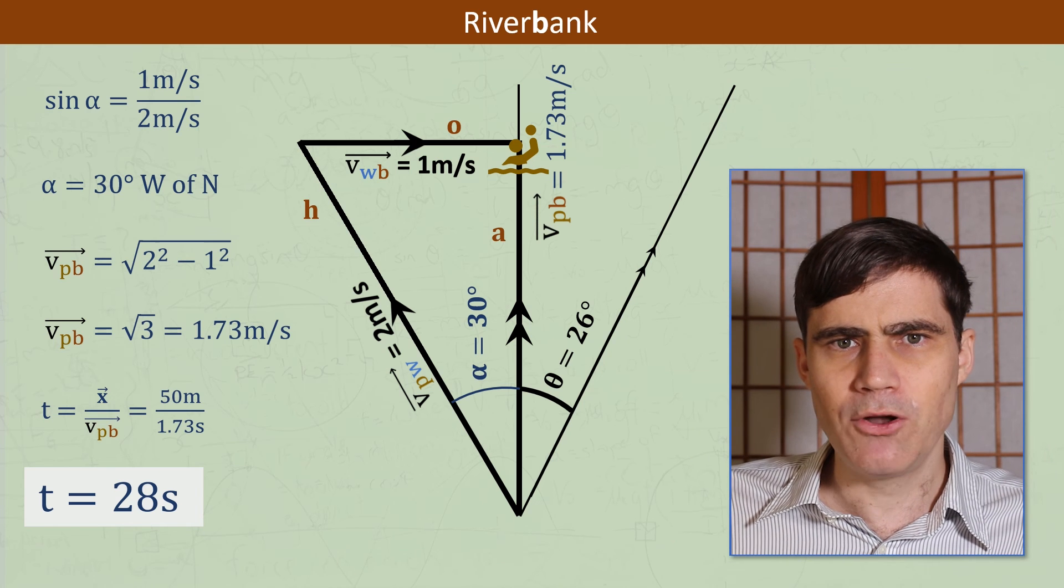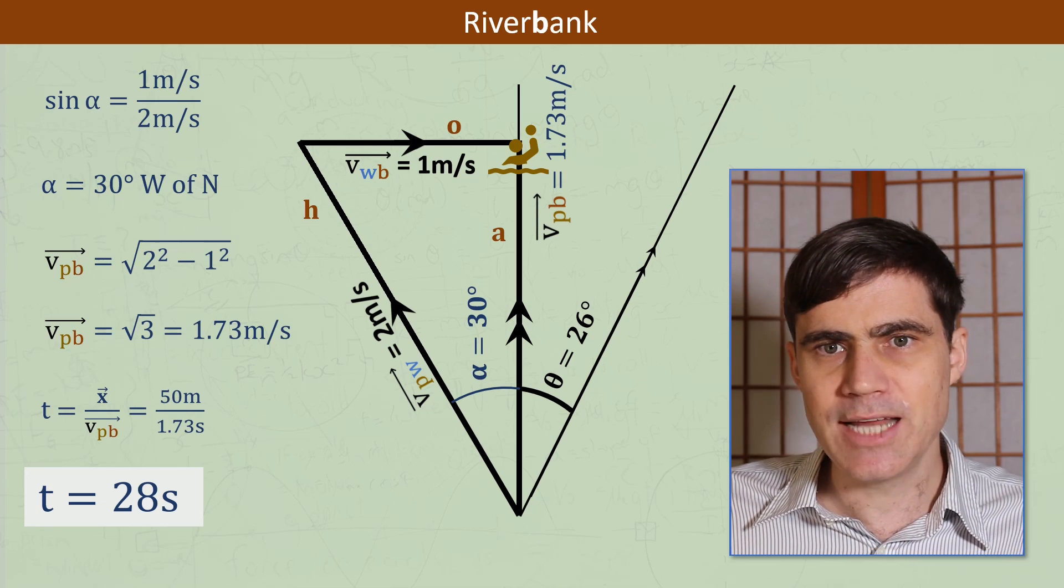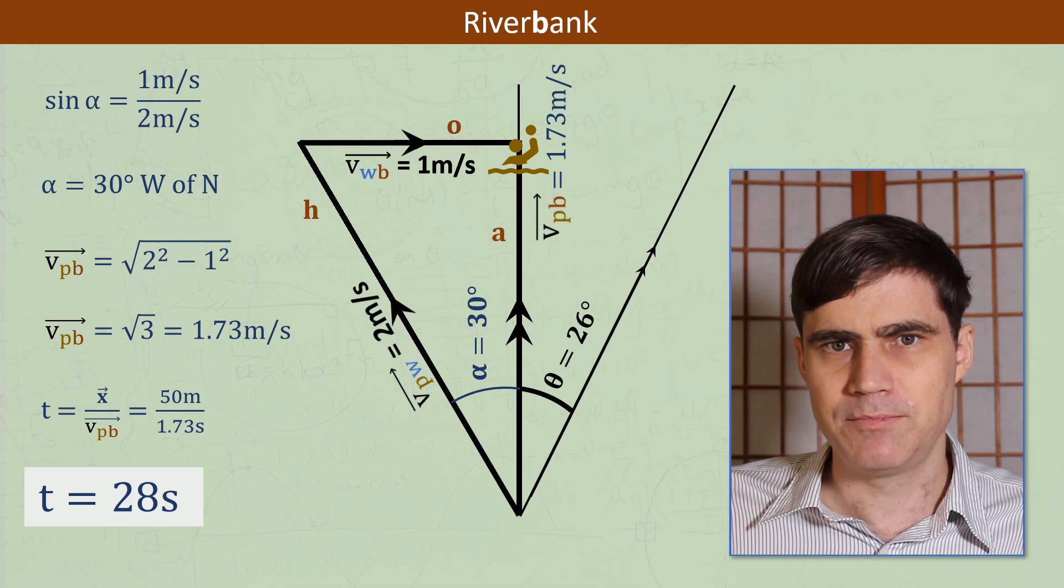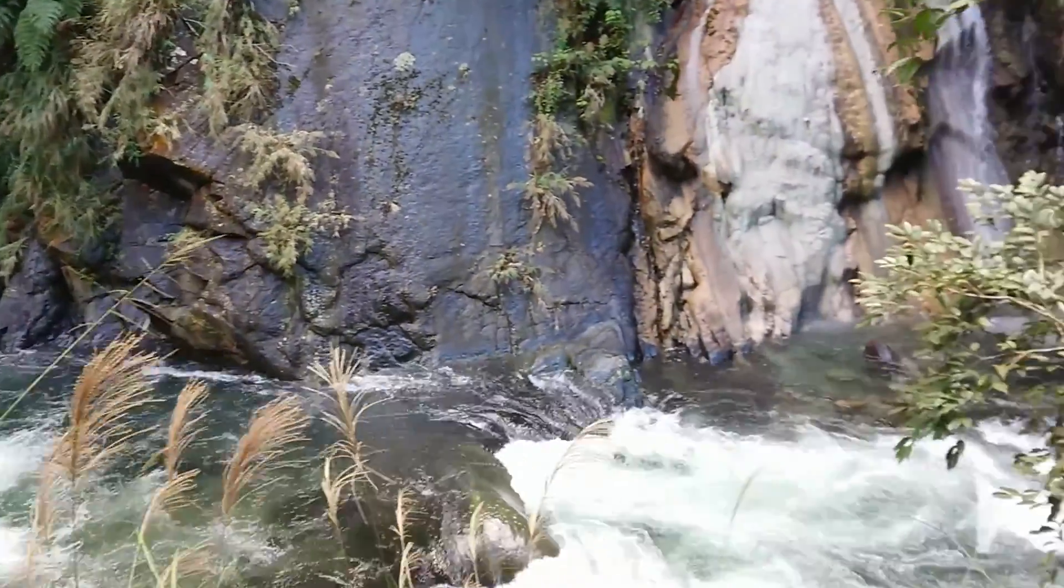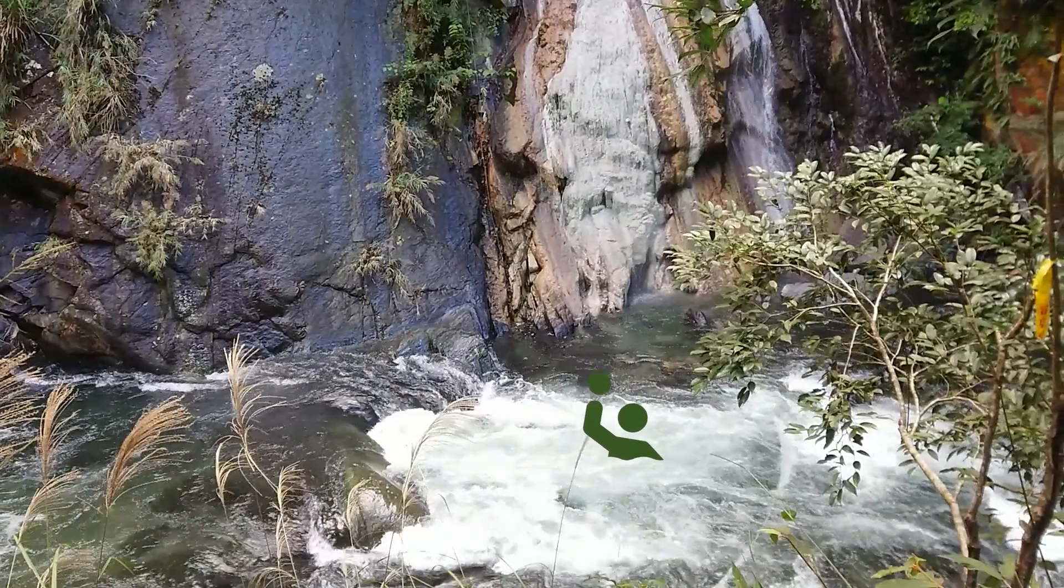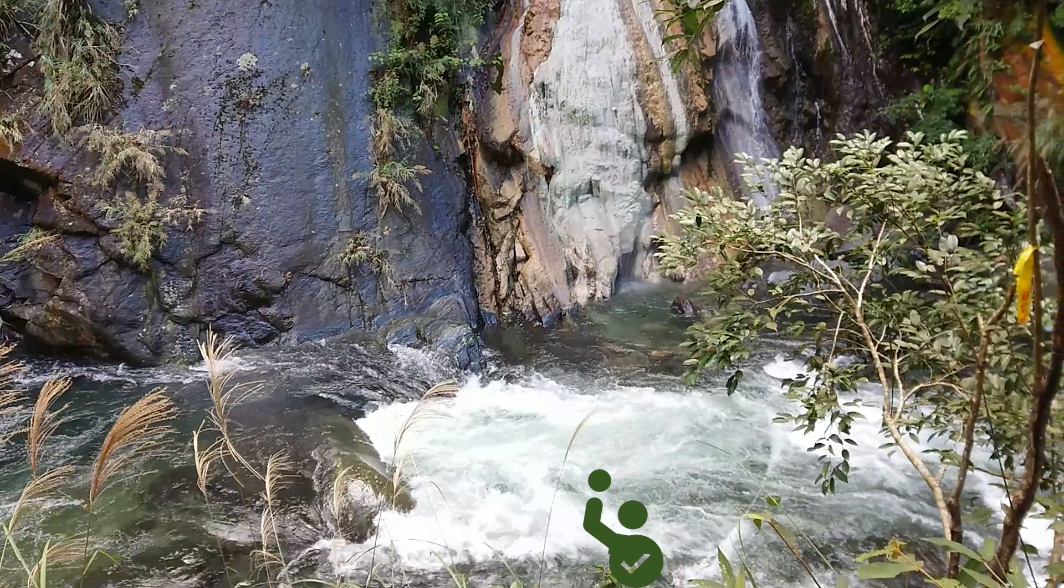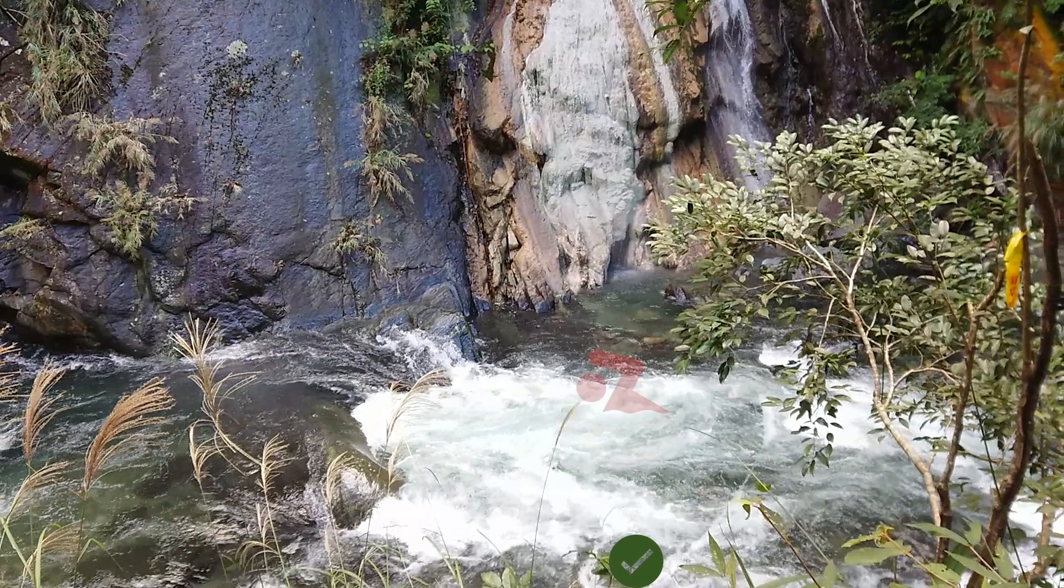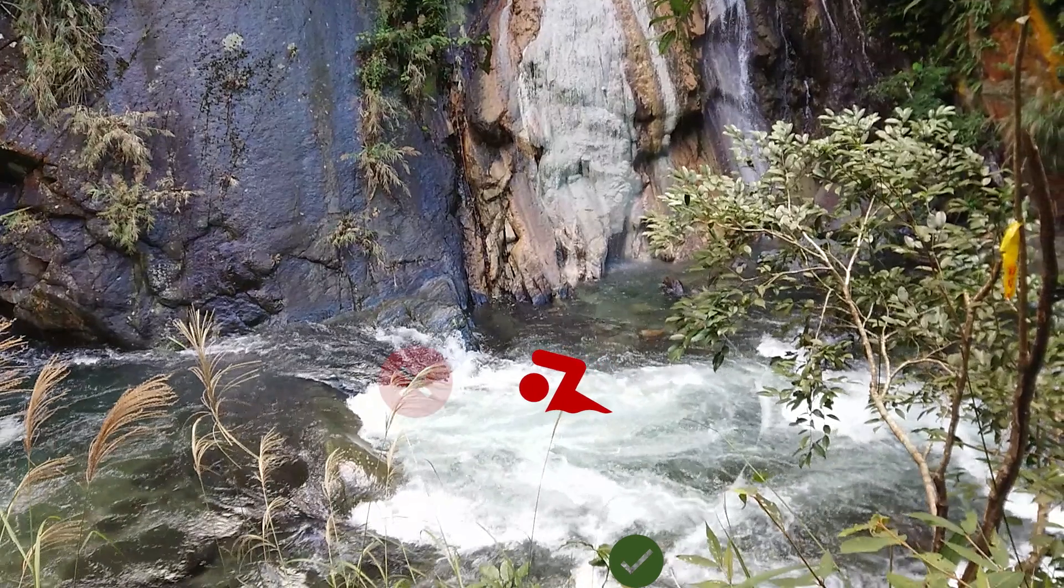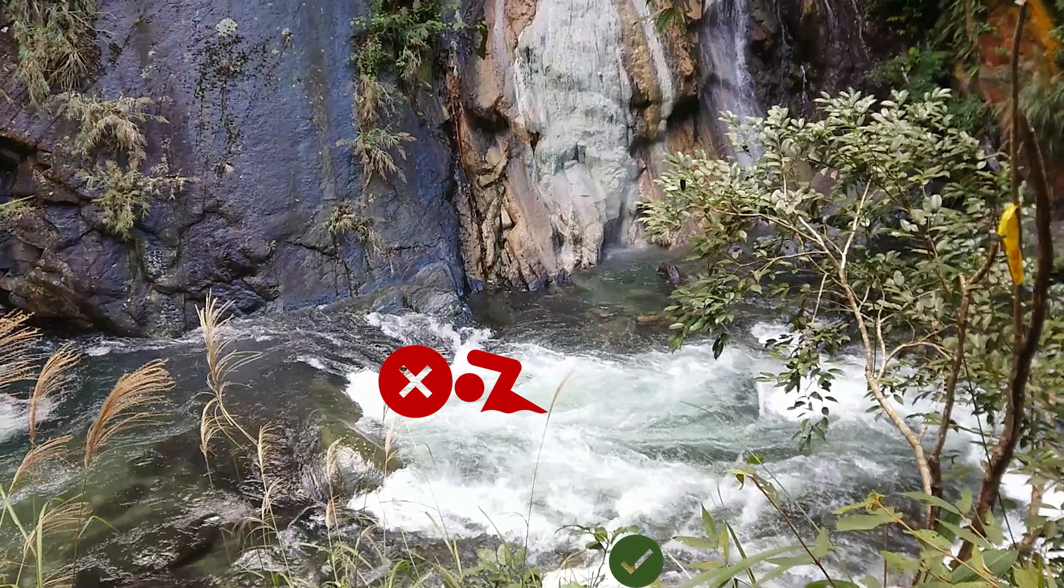It's logical that she'll take longer than the first time because some of her velocity relative to the bank is now being cancelled out by the flow of the water. This shows that if you're ever caught in a rapidly flowing river and trying to escape as quickly as possible, it's usually best to swim directly across the current, like in the first half of the problem, unless there are obstacles to avoid like rocks or waterfalls, or there are only certain points at which you can climb out of the river. This is because swimming against the stream, like in the second half of the problem, takes longer and also wastes energy fighting against the water current.